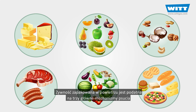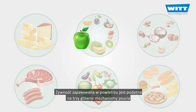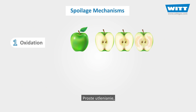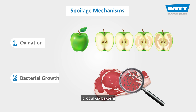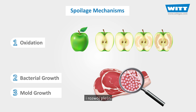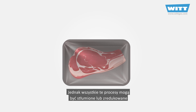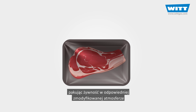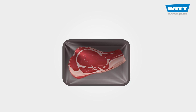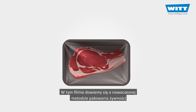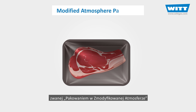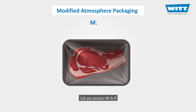When packed in air, food is susceptible to three main spoilage mechanisms: simple oxidation, bacterial growth, and mould growth. However, all of these can be suppressed or reduced by packaging the food in the appropriate modified atmosphere. In this video, we're going to learn about a modern method of food packaging called modified atmosphere packaging, or simply MAP.